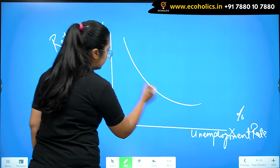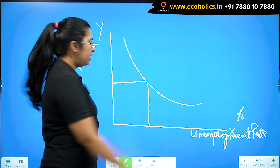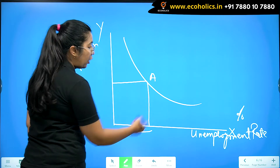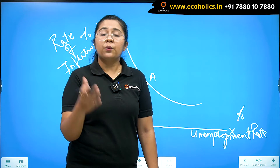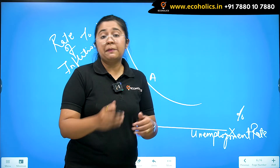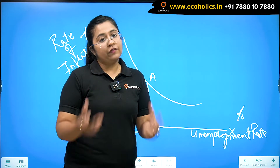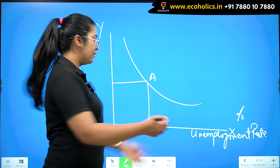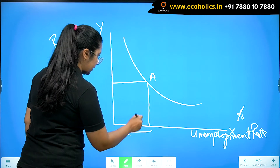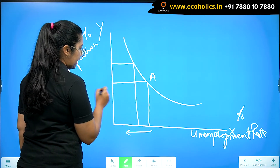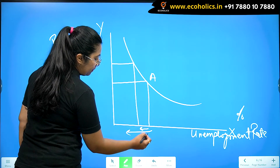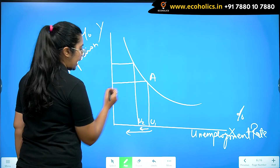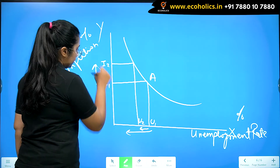Because we are representing a negative relationship between these two variables, the graph is going to be a downward-sloping curve. If we are at point A and the unemployment rate decreases — because of growth in the economy — people get more employed and have more money, demand more commodities, and the inflation rate increases. So as unemployment goes from U1 to U2, inflation moves from I1 to I2.